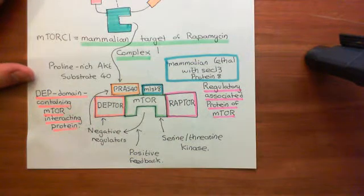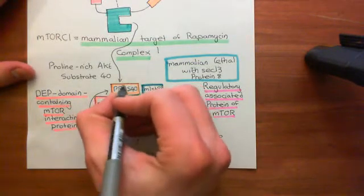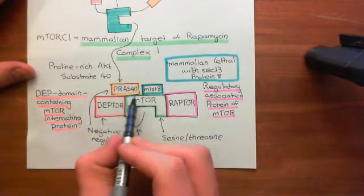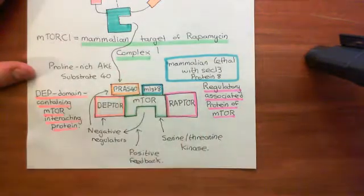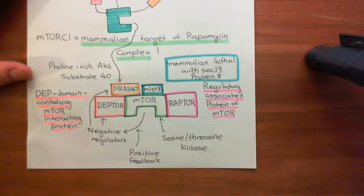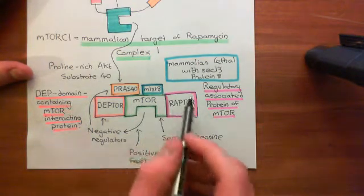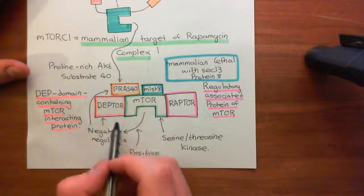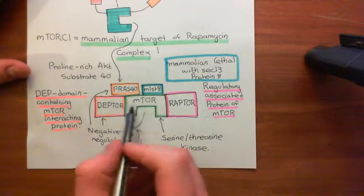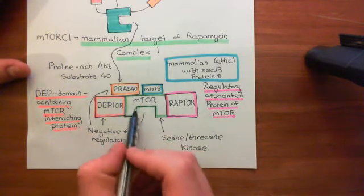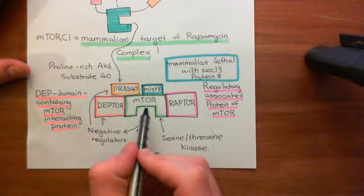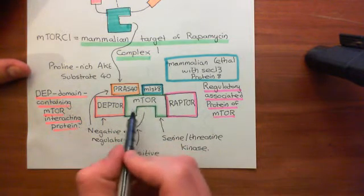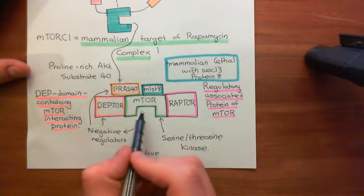Protein kinase B phosphorylates PRAS40, the proline-rich AKT substrate 40. When protein kinase B phosphorylates PRAS40, it causes PRAS40 to fall off mTORC1. That then stops PRAS40 from negatively regulating the mTOR enzyme at the centre, and that increases the activity of the mammalian target of rapamycin enzyme.